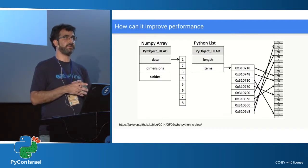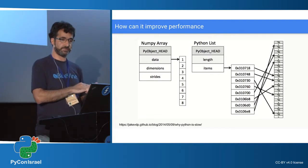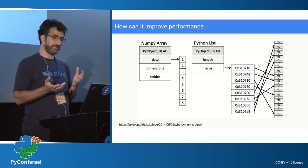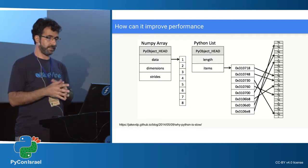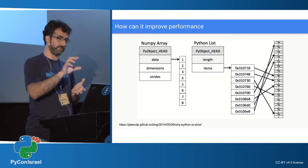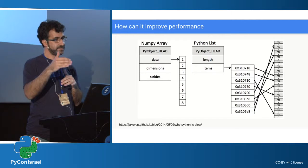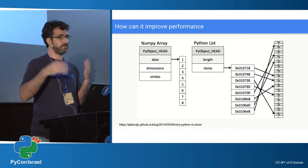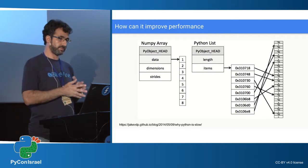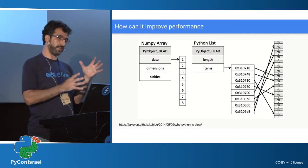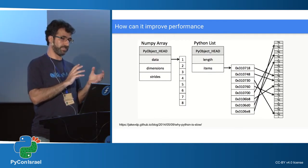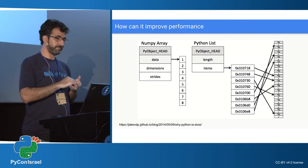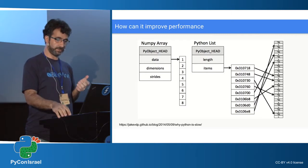How can Pandas actually improve performance? Most of it is written in C, which of course explains a lot. But you have to understand how the data structure is set up. On the right, a typical Python data structure — a Python list — where the object refers to an array of references, each a pointer to a Python object, and these objects are scattered all over memory, not contiguous. Contrary to that, if you look at a NumPy array, you have the Python object layer with metadata, but the data itself is kept in contiguous memory. This makes memory usage and CPU usage much more efficient.